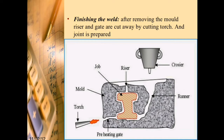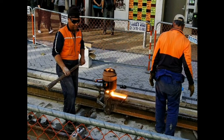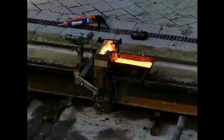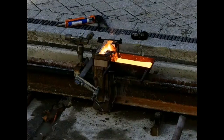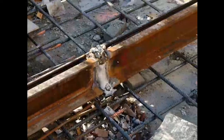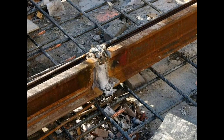This diagram shows the thermite welding process with the torch, mould, job, riser, crucible, and runner. This image shows a thermite welding operation. Thermite welding in railroads: the railway lines are joined by using thermite welding.